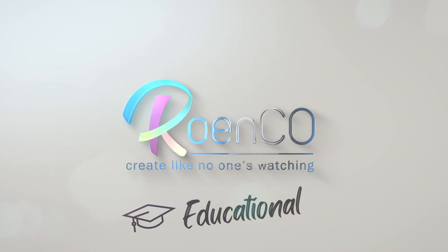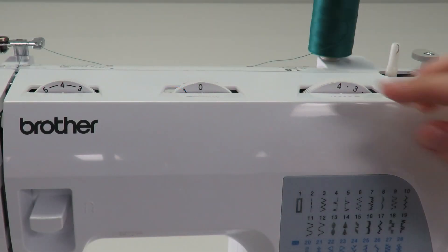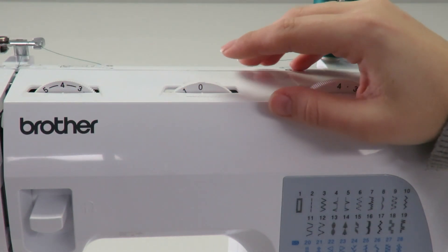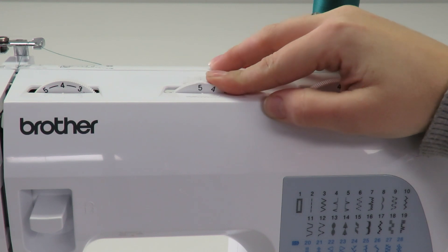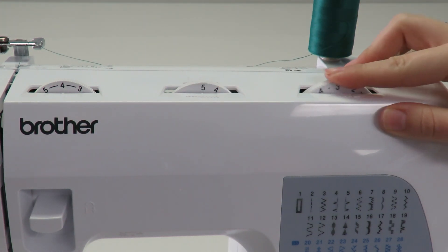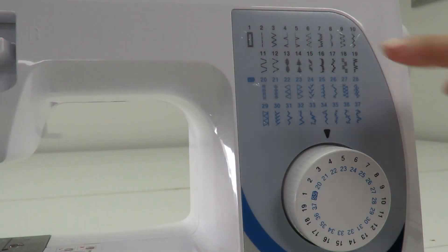Creating a buttonhole with the Brother GS 3700. Make sure the left upper tension dial is set to 4, turn the middle stitch width dial to 5, and turn the right stitch length dial to 0.5. Select the...